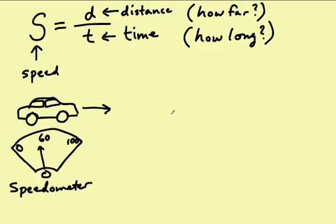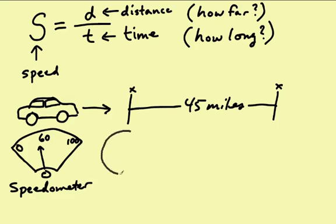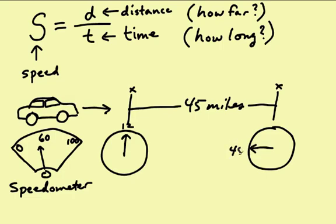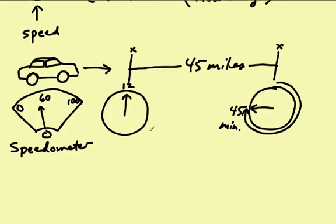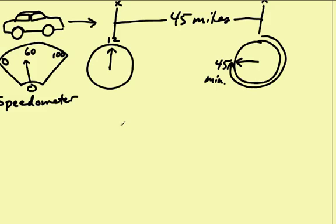So we have a car and it's traveling 45 miles on the freeway. Starts here and stops there. And within that 45 miles, here I'm drawing my two clocks to show that time has passed. It starts at the top of the hour, and this minute hand travels to 45 minutes. So in 45 minutes, it's traveled 45 miles.